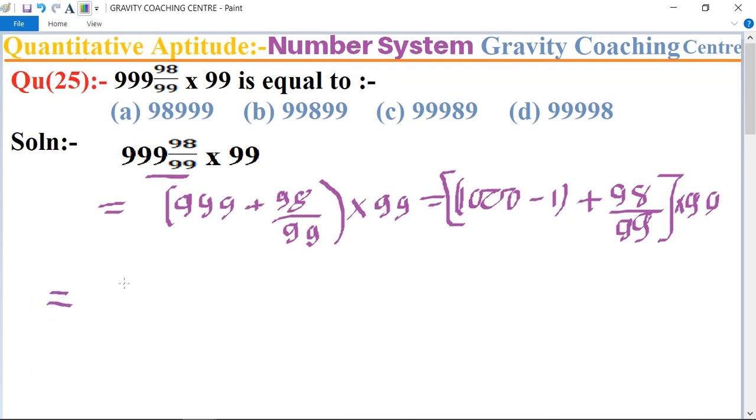So equal to, now we separate: 1000 plus 98 upon 99 minus 1, and separate them from 1000 multiply 99.